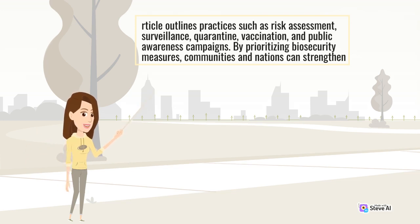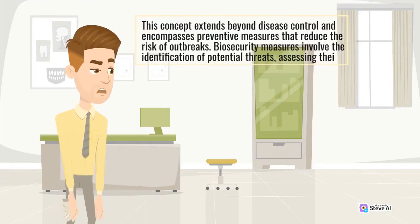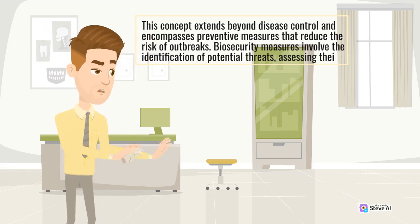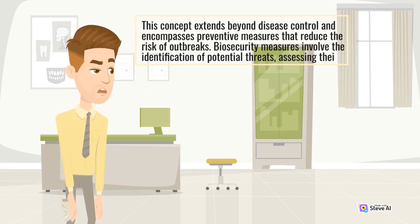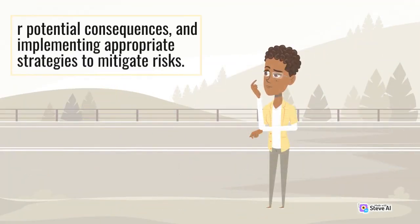By prioritizing biosecurity measures, communities and nations can strengthen their resilience to outbreaks and protect lives, livelihoods, and ecosystems. This concept extends beyond disease control and encompasses preventive measures that reduce the risk of outbreaks. Biosecurity measures involve the identification of potential threats, assessing their potential consequences, and implementing appropriate strategies to mitigate risks.